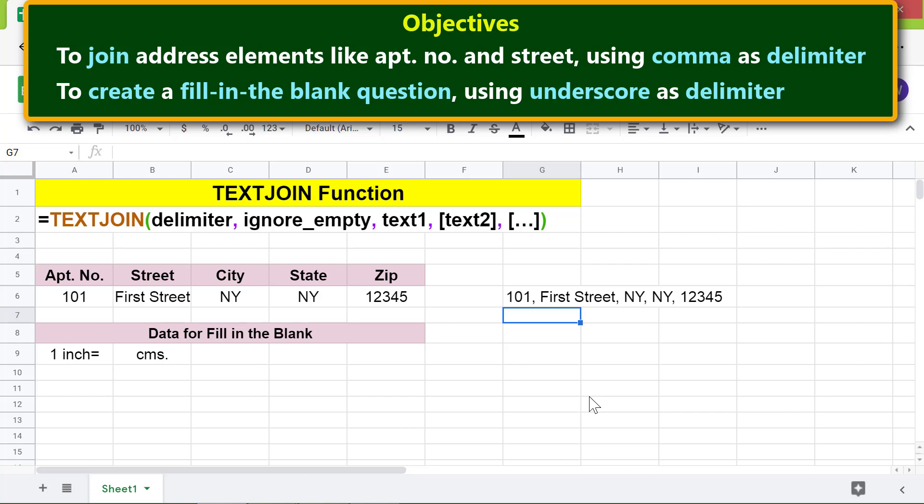Let me type the TEXTJOIN function formula again. For delimiter, type underscore and insert a space, then type comma.